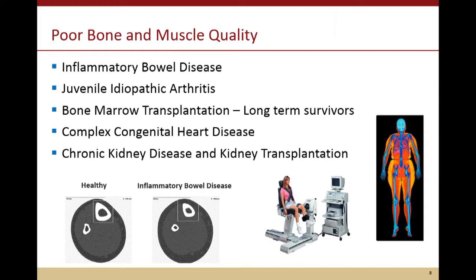We've applied these tools to many different diseases where we've seen the greatest cause for concern. Using CT of the calf, you can see the child with inflammatory bowel disease has a smaller bone, and we think that once you're done growing, that's the bone you'll have for your lifespan — and that's irreversible. We also look at muscle force. Using whole body DEXA where lean mass is shown in orange, we can measure muscle mass, but we've appreciated it's not enough to look at how much muscle you have — we need to know the quality of that muscle. Children with inflammatory bowel disease and children with chronic kidney disease cannot generate as much force relative to how much muscle they have.